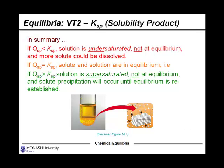So in summary, if QSP is less than Ksp, the solution is under-saturated. It's not at equilibrium yet, and more solute could still be dissolved. We know that if Q equals K, then the solute and solution are in equilibrium. But if Q is greater than Ksp, the solution is super-saturated. It's not at equilibrium, and we should be seeing some precipitation.